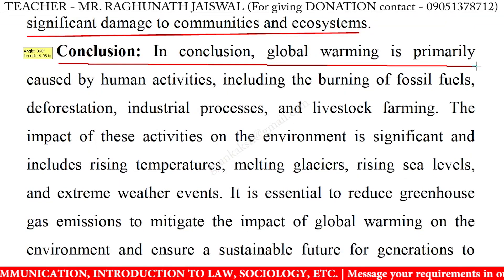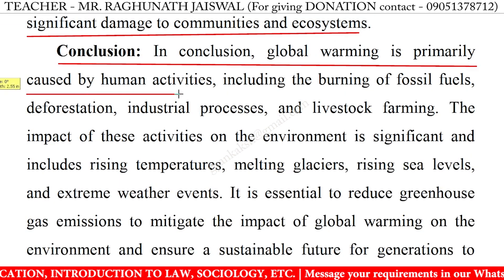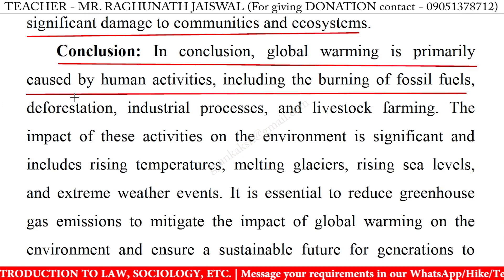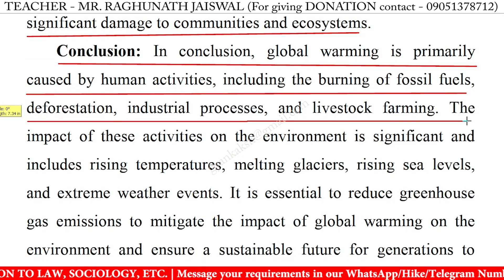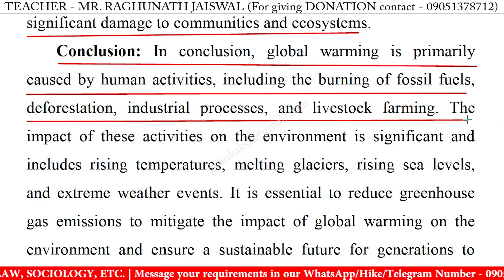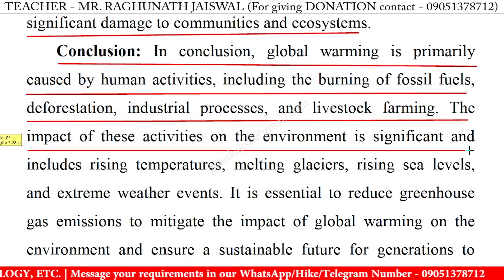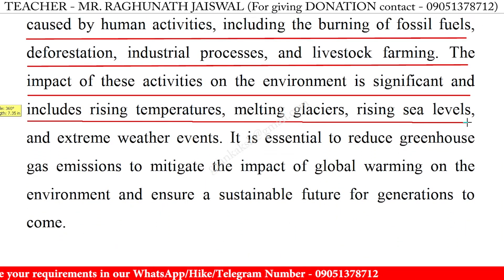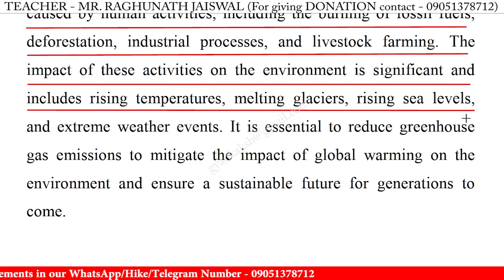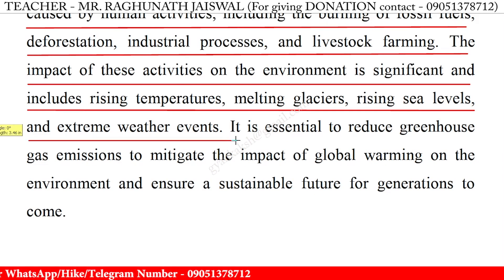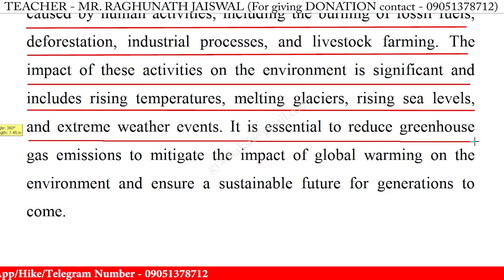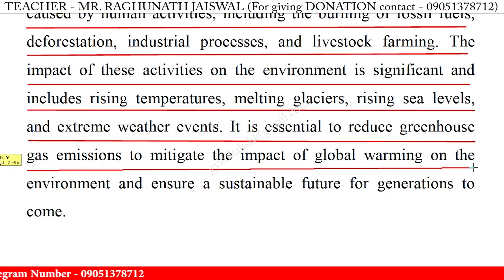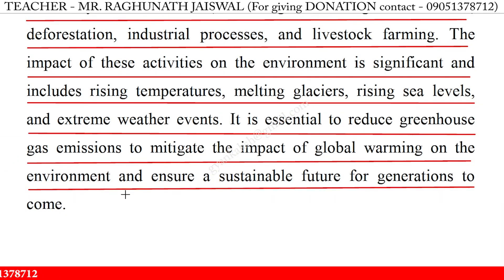Conclusion. In conclusion, global warming is primarily caused by human activities including the burning of fossil fuels, deforestation, industrial processes and livestock farming. The impact of these activities on the environment is significant and includes rising temperatures, melting glaciers, rising sea levels and extreme weather events. It is essential to reduce greenhouse gas emissions to mitigate the impact of global warming on the environment and ensure a sustainable future for generations to come.